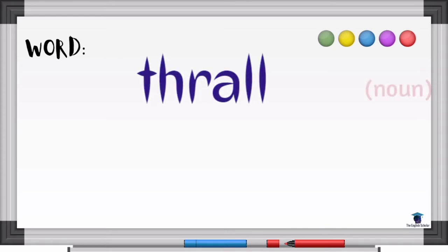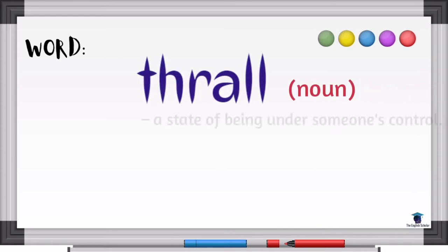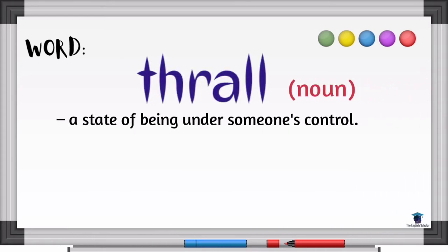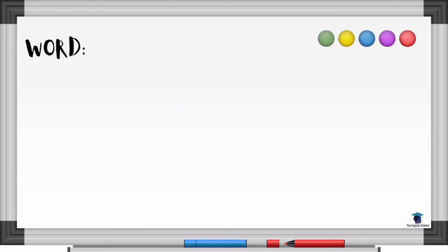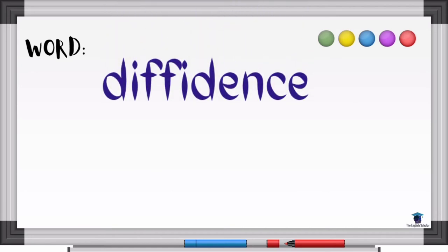Thrall. The word thrall is a noun. It is a state of being under someone's control — it refers to someone held in bondage. In history, this word is also similar to a slave or servant.